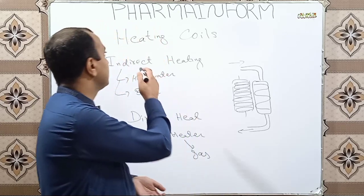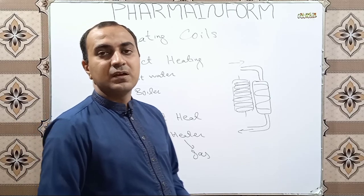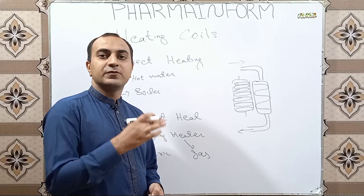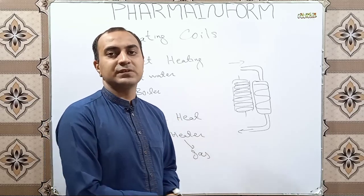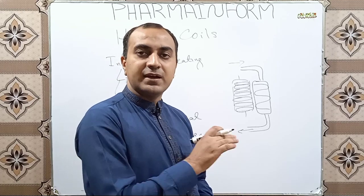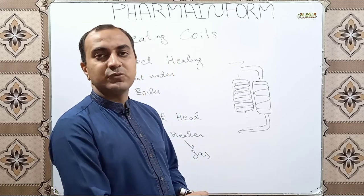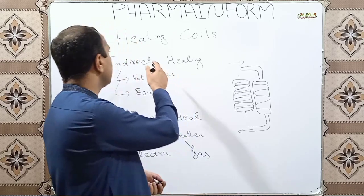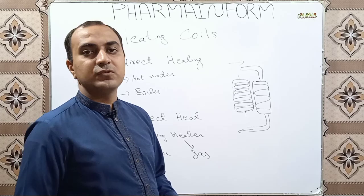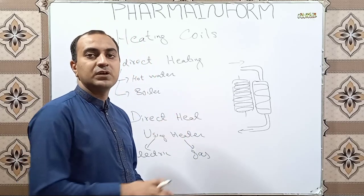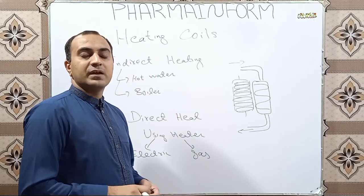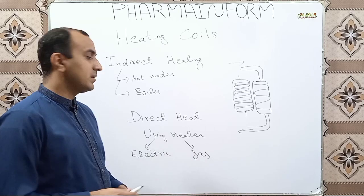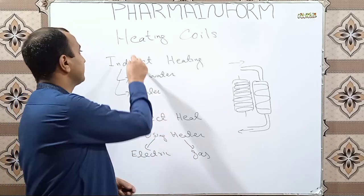Heating coils — as you know, HVAC means heating, ventilation and air conditioning system. So the process of heating we will discuss in this video. Heating in HVAC is done by using heating coils, which are basically installed in the air handling unit. You can use them according to requirement. As we discussed, cooling is of two types; in the same way, heating is also of two types: indirect heating and direct heating.